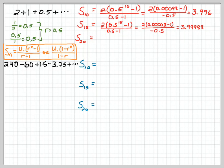And then as we go with the S of 20, we've got 2 times 0.5 to the 20th power minus 1 over 0.5 minus 1. Take that out and expand it and we get 2 times 0.00000095 minus 1 divided by negative 0.5. Simplify that and we get 3.999996.